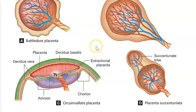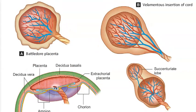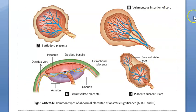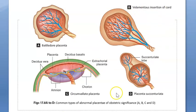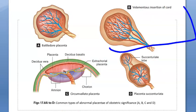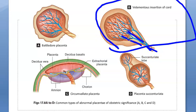Battledore placenta is where the cord is attached to the margin. Coming back to the main topic — velamentous insertion of cord — the umbilical cord is attached to the membranes and the fetal vessels traverse a distance before they reach the placenta.